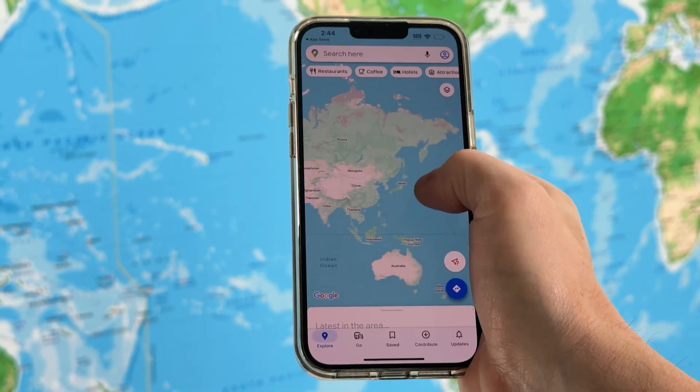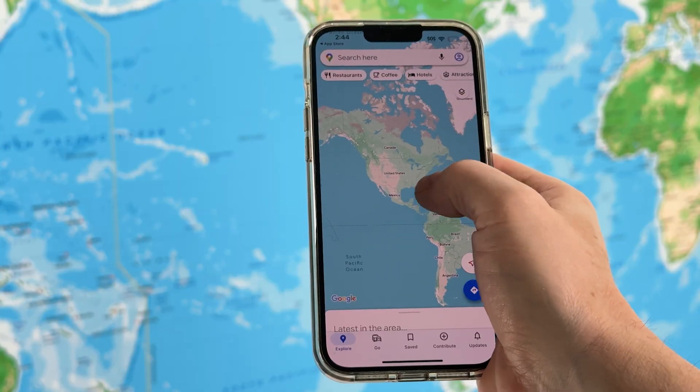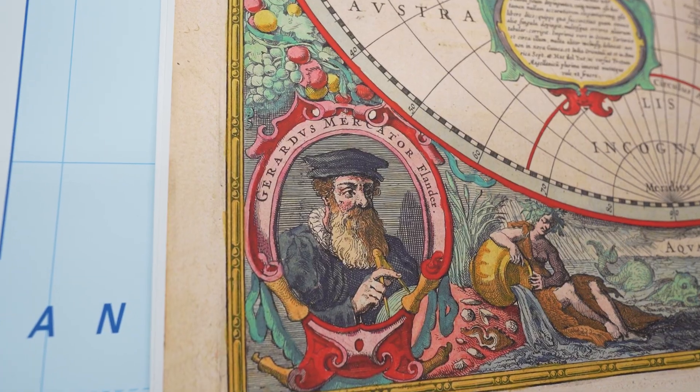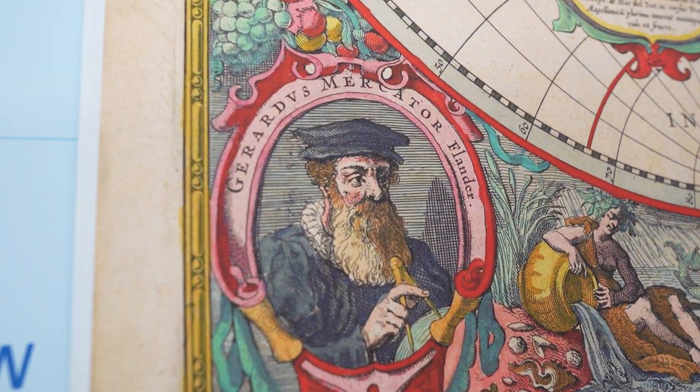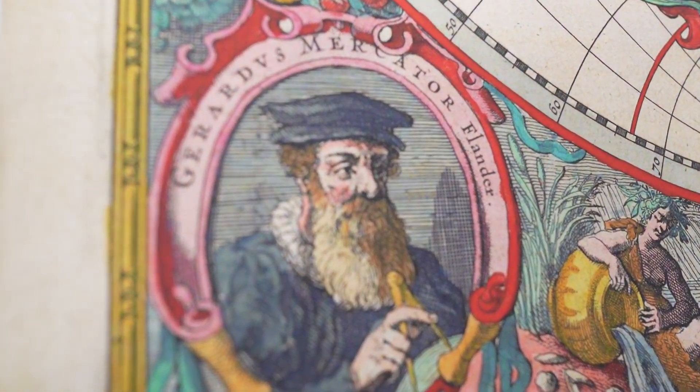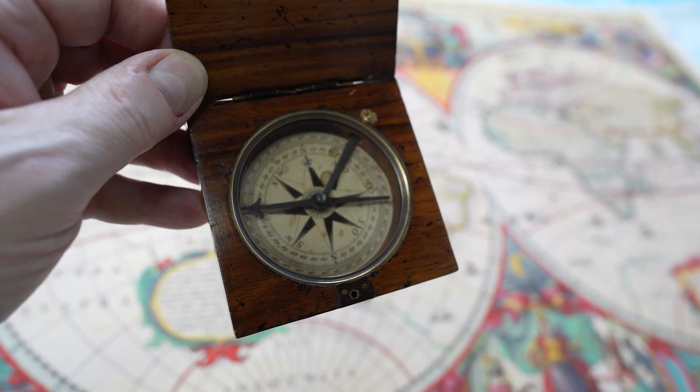Here's the thing. The Mercator projection wasn't designed to teach geography. It was designed in 1569 by a Flemish cartographer named Gerardus Mercator, and it was made for one very specific purpose, ocean navigation. And for that purpose, it's actually brilliant.